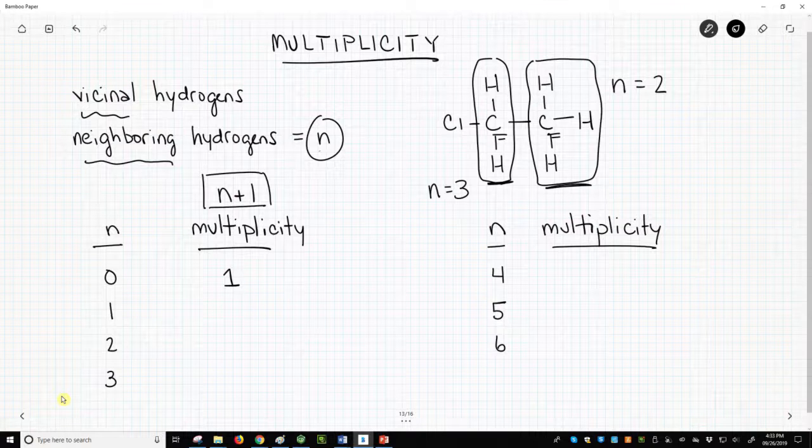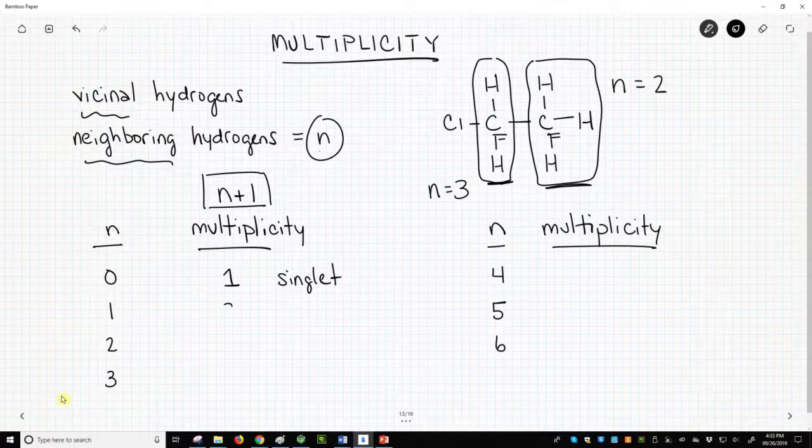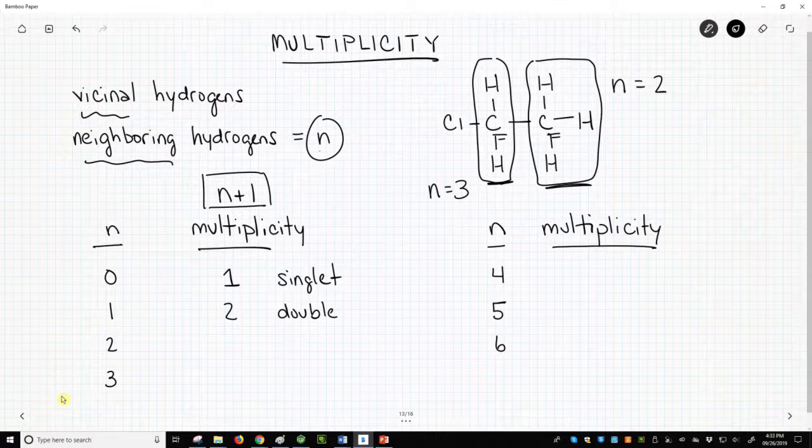If N equals 0, no vicinal hydrogens, multiplicity equals 1, and the peak will appear as a singlet. If N equals 1, multiplicity equals 2, and the peak will appear as a doublet.